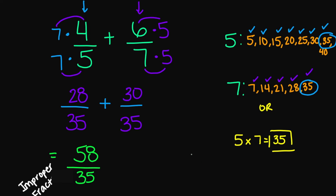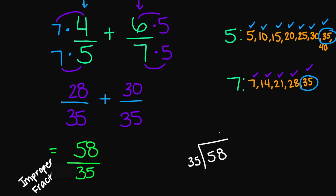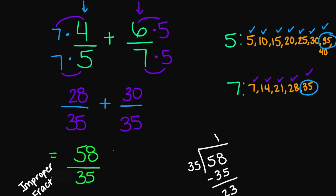So let's go ahead and turn that into a mixed number. We have 35 on the outside and 58 on the inside. 35 goes into 58 one time. 35 times 1 is 35. 58 minus 35 is going to give us 23. So we have 58 over 35, or you're going to get 1 and 23 over 35. So these are your answers.